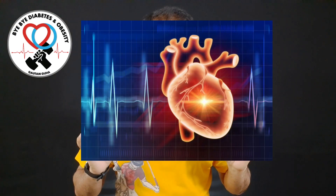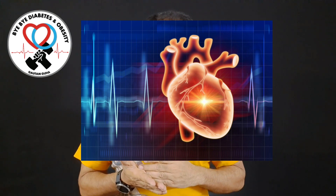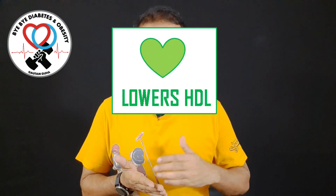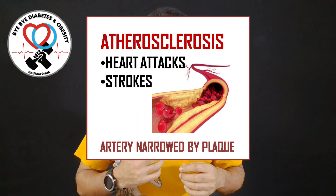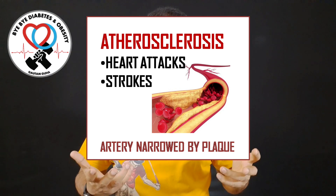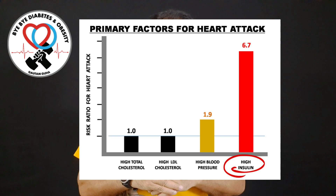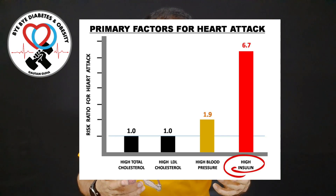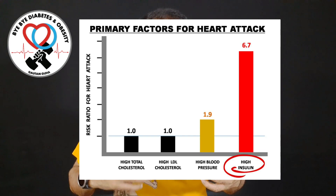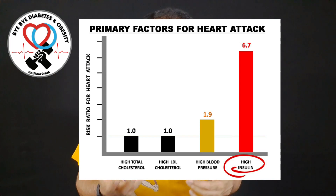Besides being the cause of diabetes mellitus type 2, insulin resistance is also responsible for a number of other lifestyle ailments. The first thing it affects is your heart health. Insulin resistance is responsible for lowering your HDL or the good cholesterol, responsible for narrowing down of your arteries by plaque — we call it atherosclerosis — and it is responsible for heart attacks. If you look at this diagram, the risk ratio for heart attack is highest for people with high insulin, much higher than even factors like total cholesterol, LDL cholesterol, and high blood pressure.